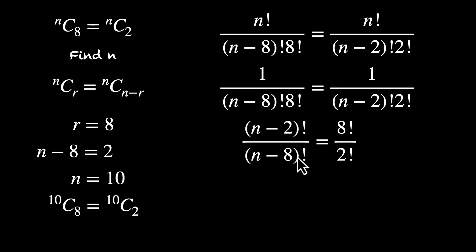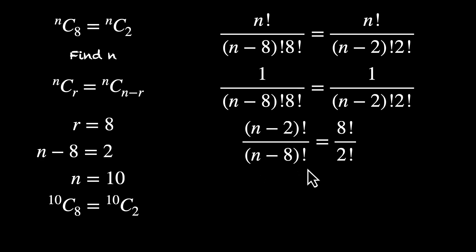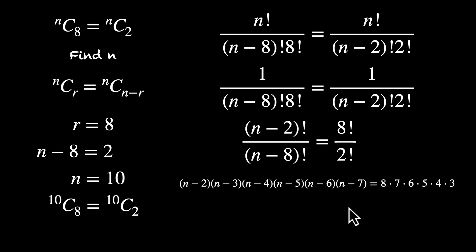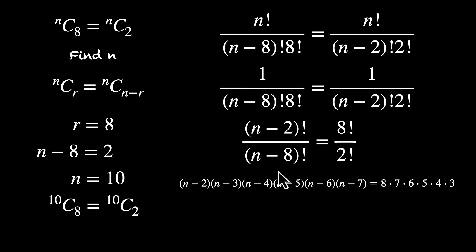Cross multiplying, we have (n-2) factorial over (n-8) factorial on the left, and 8 factorial over 2 factorial on the right. The right-hand side is 8×7×6×5×4×3×2×1 divided by 2×1, so we stop at 3. On the left-hand side, we have six terms: (n-2), (n-3), (n-4), (n-5), (n-6), and (n-7) — anything below (n-8) and onwards cancels out with (n-8) factorial.